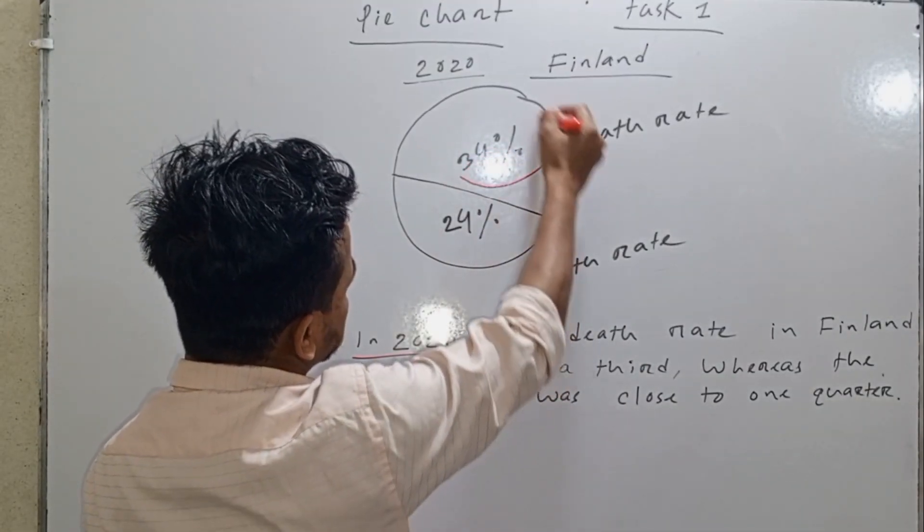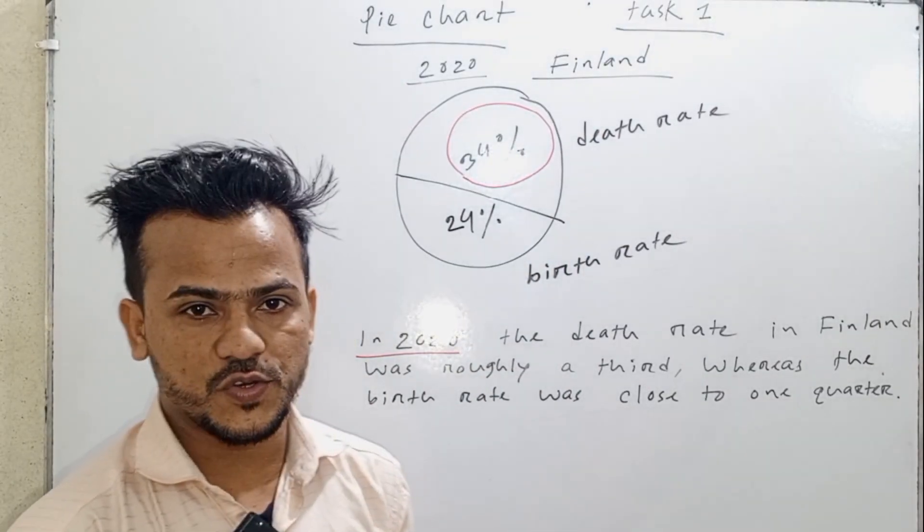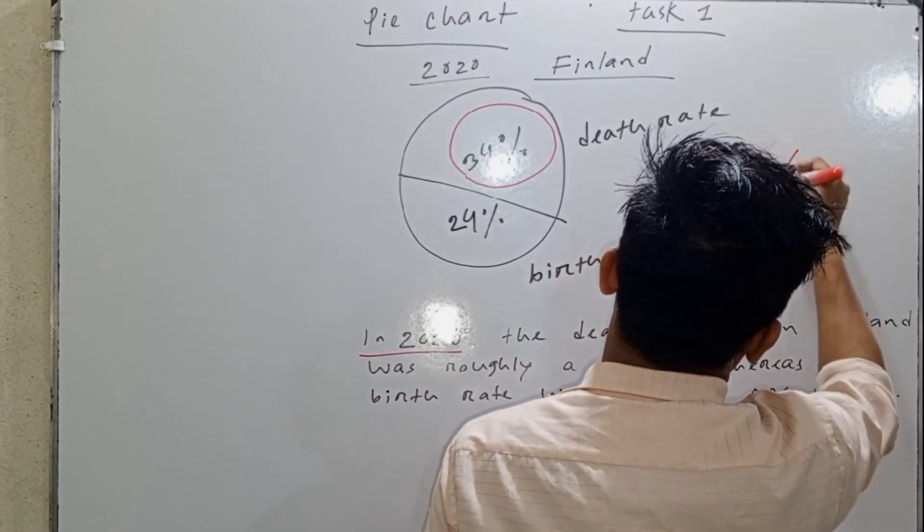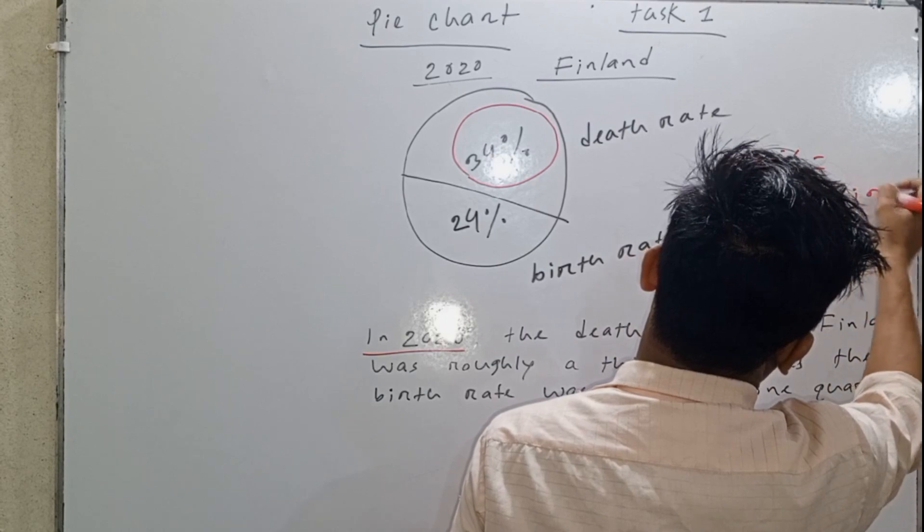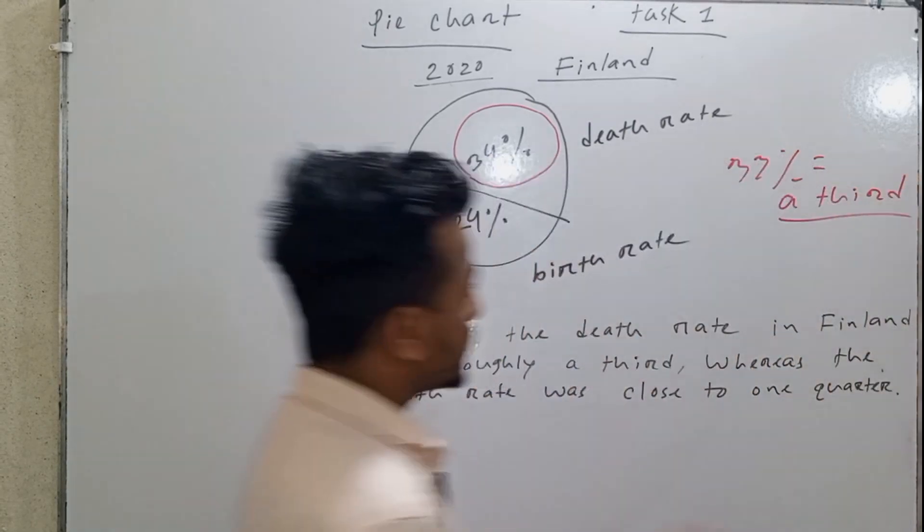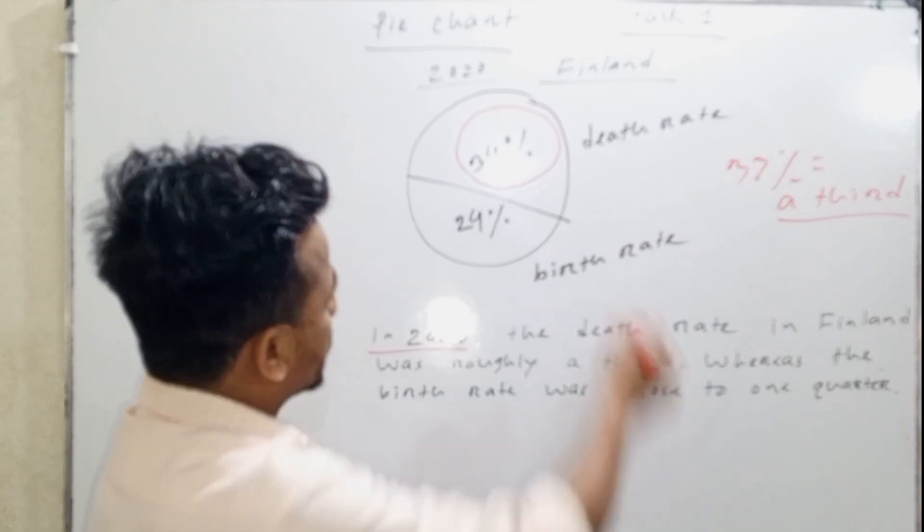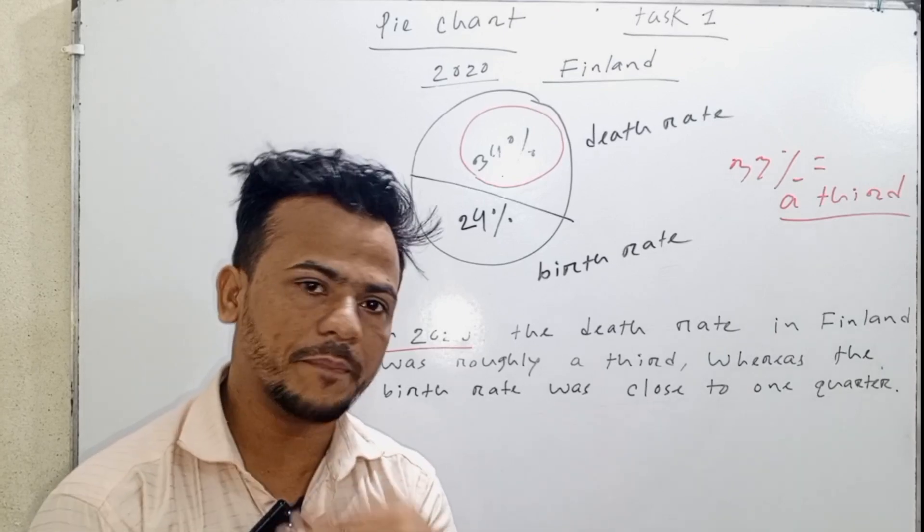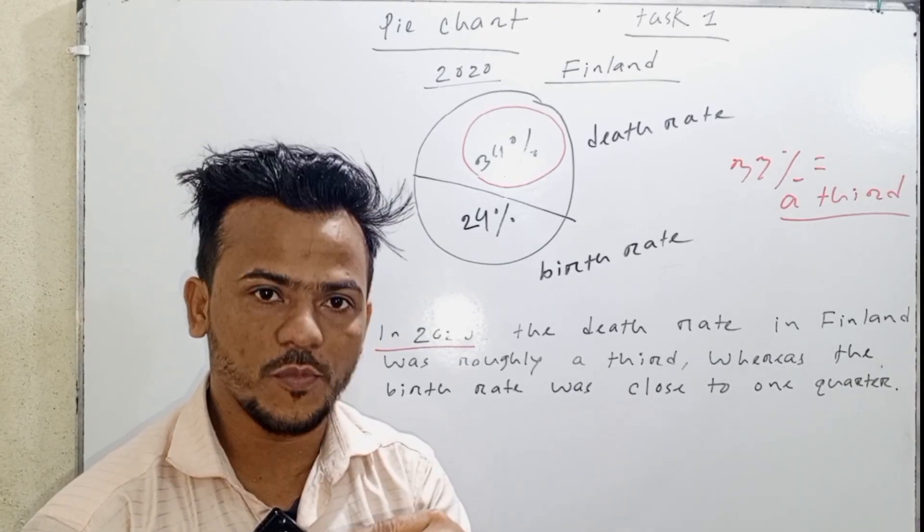Students just mentioned that 34%. Let's talk about it. 33% is one third. So, 33% is one third. Other than one third, also 34% is one third.